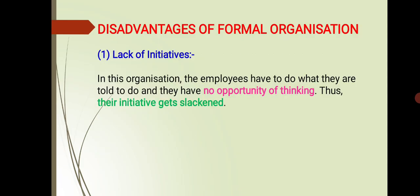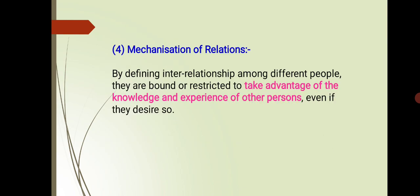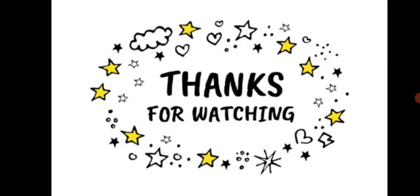This was a very small topic — the disadvantages of formal organization. We discussed four disadvantages: first, lack of initiative; second, pressure of officers' autocracy on employees; third, delay in work; fourth, mechanization of relations. I hope you liked this video. Thanks and have a wonderful day.